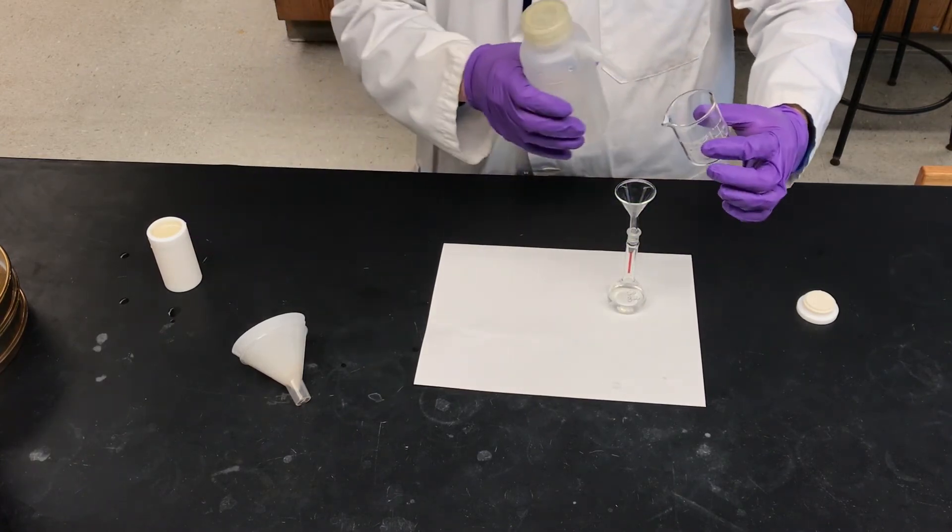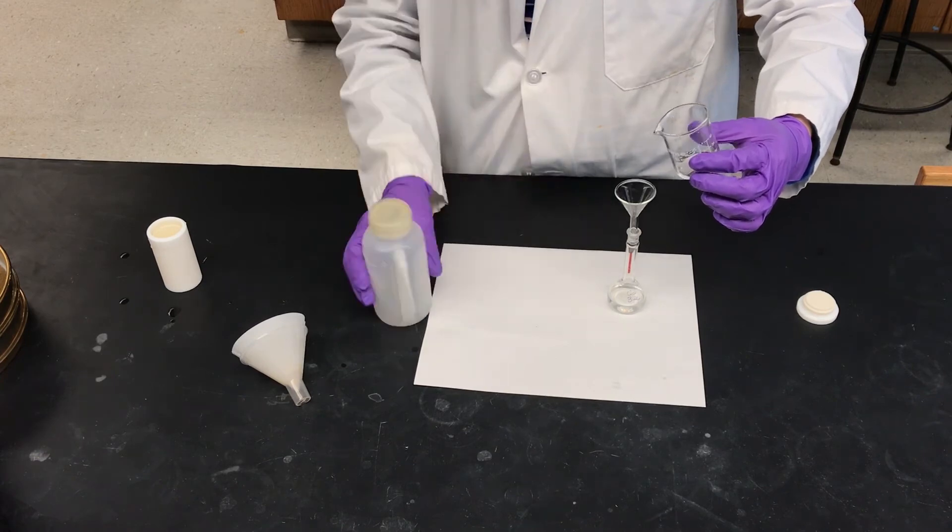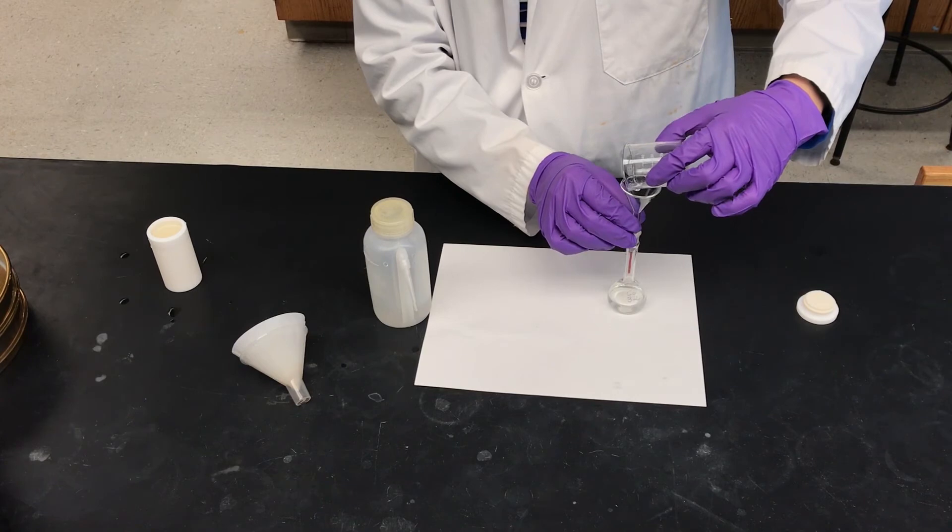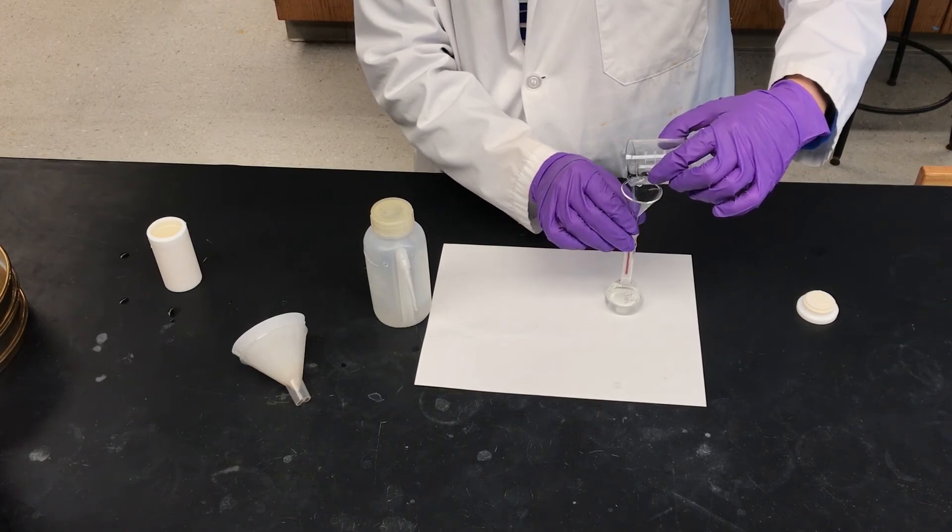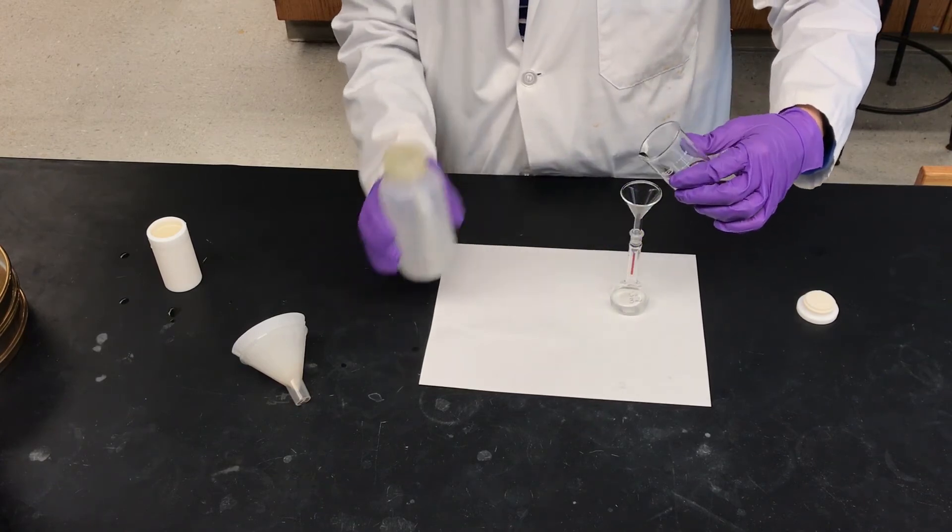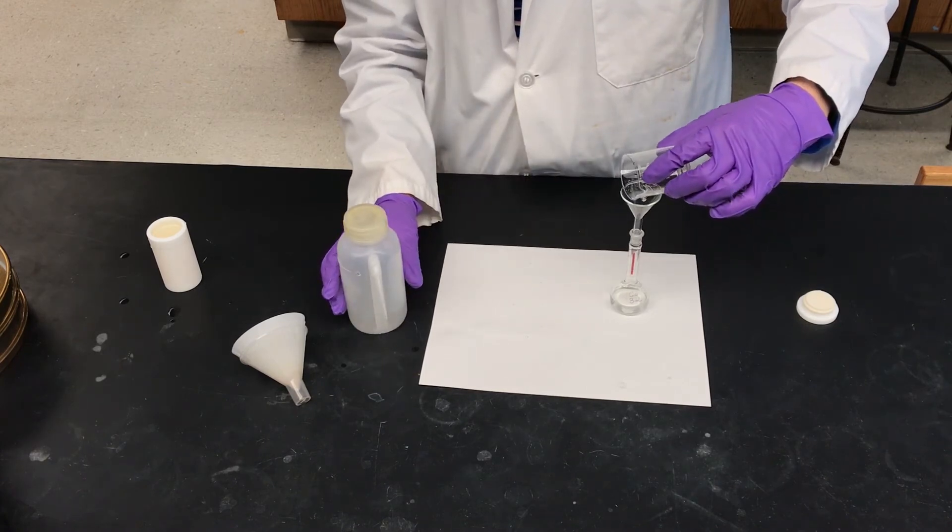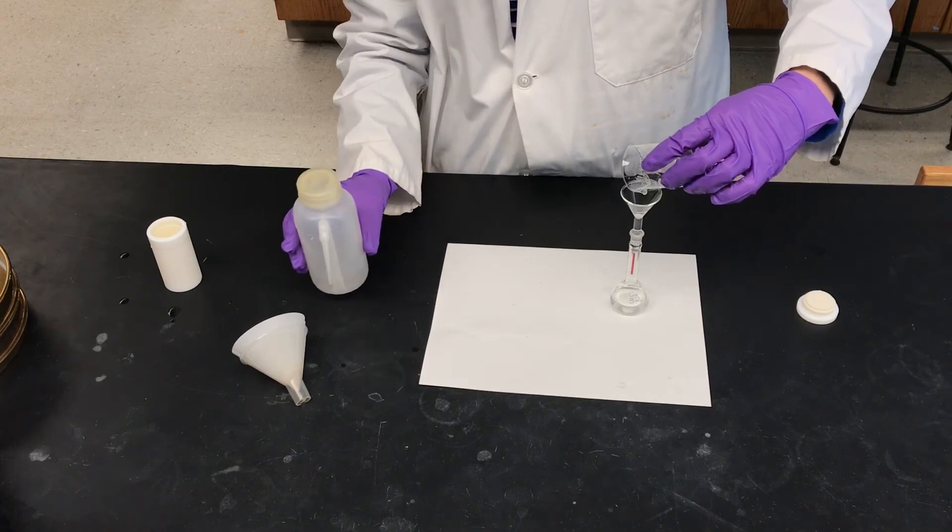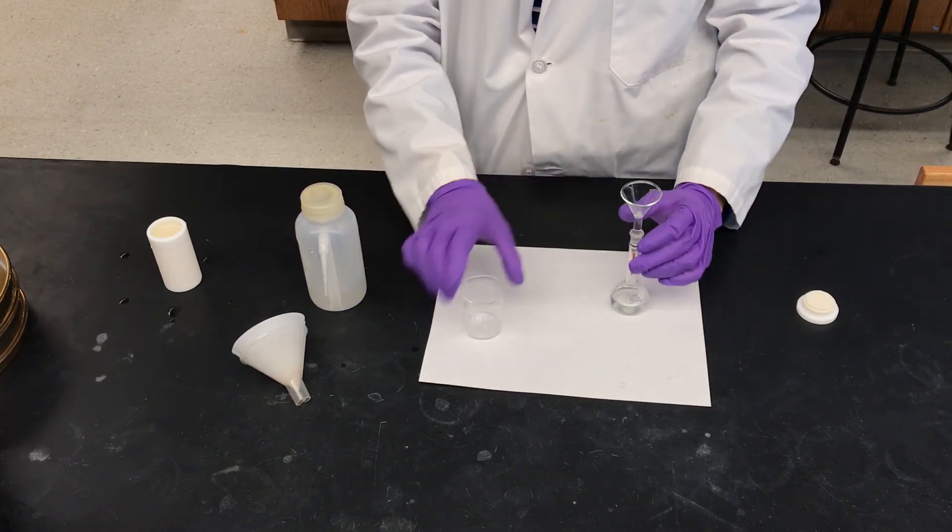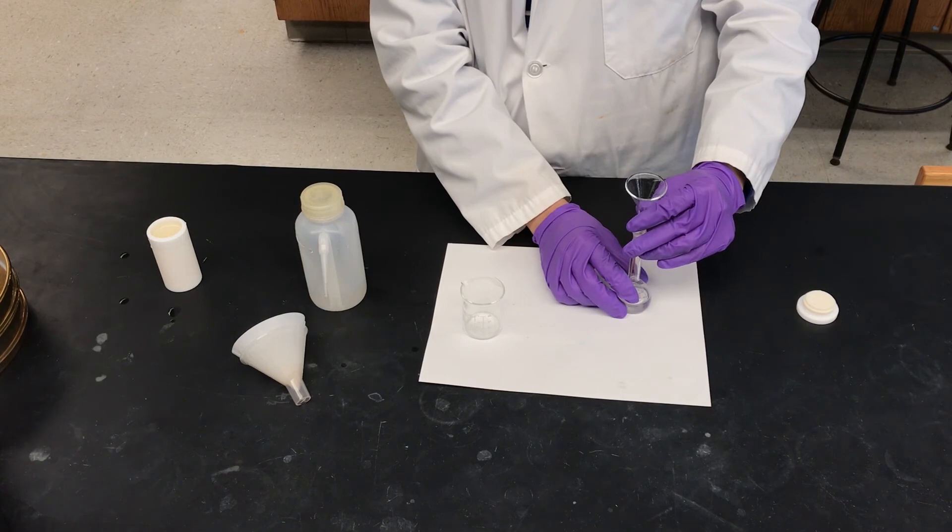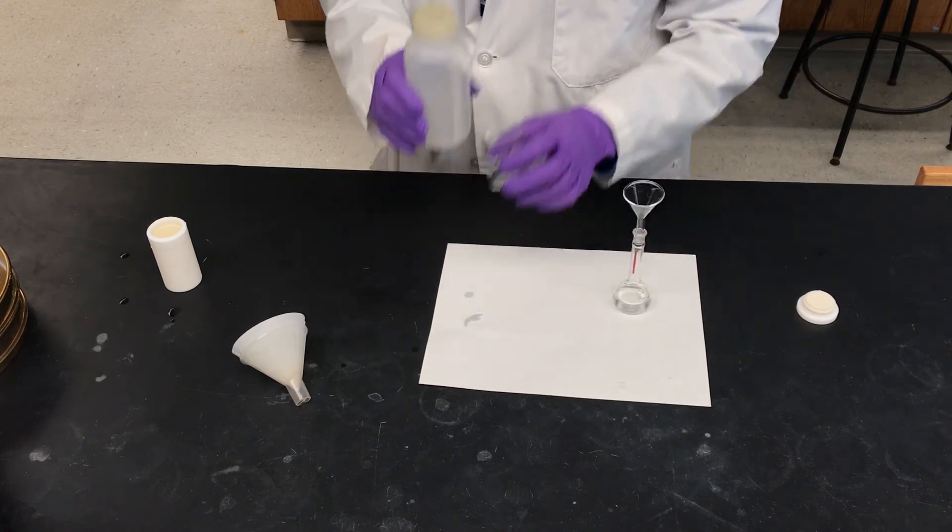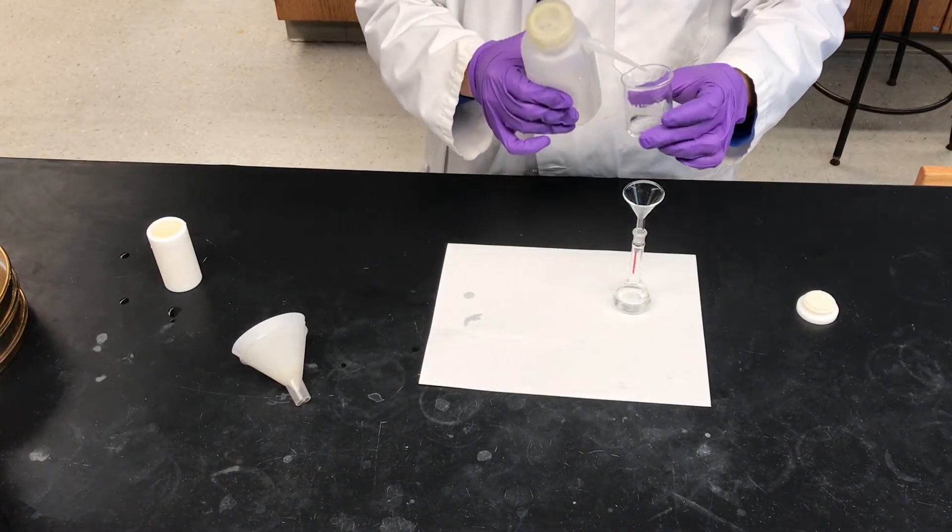You don't have to use a funnel if you don't want to. And now again, rinsing. Small amounts, two or three, maybe four times. This is your practice at being a really good analytical chemist. Once you've gotten everything out of your beaker and feel happy with that, you should then rinse down your funnel.